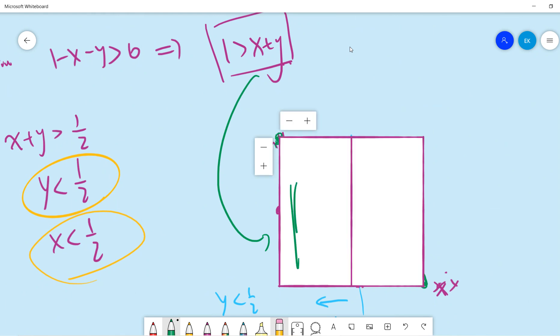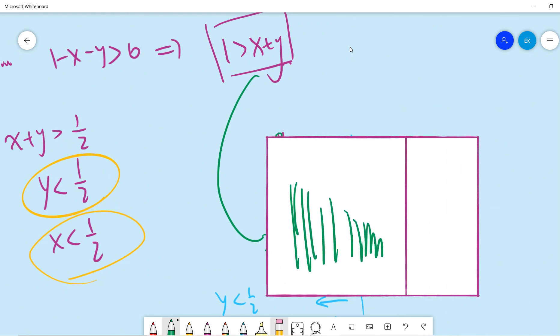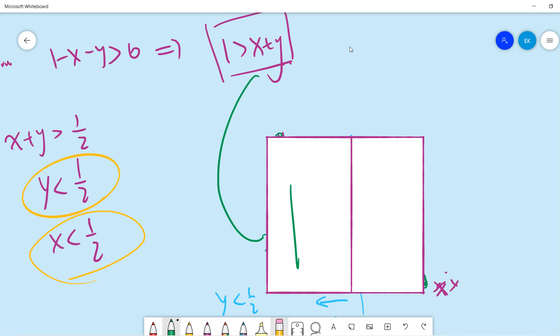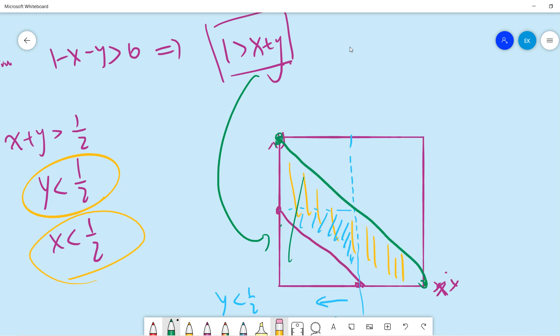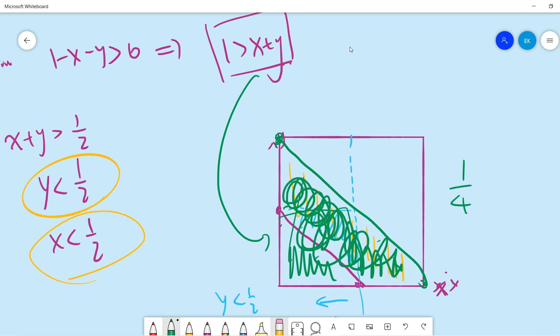So actually I don't know why there is a half this, but basically you understand what I'm talking about, this green region. And the blue region is here, so the answer is one, two, three, four. So answer is one over four, 0.25.